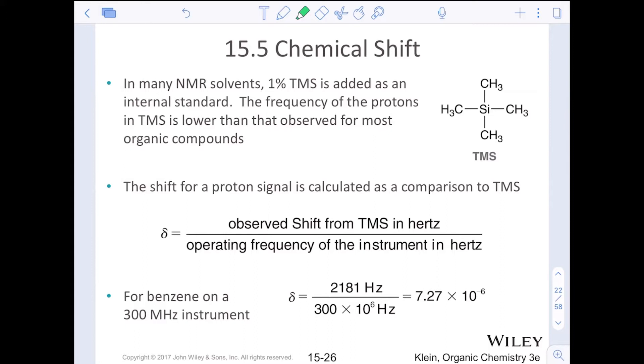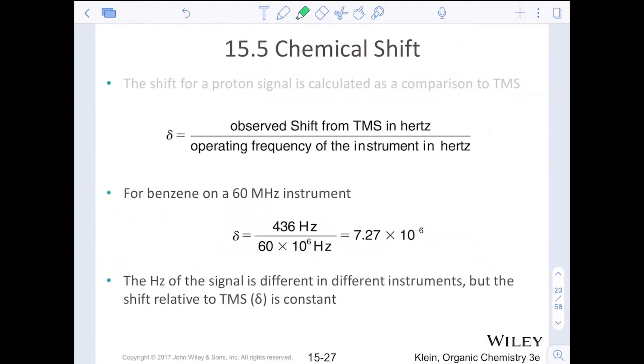In many NMR solvents, 1% of TMS, tetramethylsilyl, is added as an internal standard. The frequency of those protons in the four methyl groups on TMS is used as our ground zero, our point of zero. The shift for all of our proton signals are calculated as a comparison to this TMS. We put TMS in our sample just so that we know where our zero point is, and then we do this calculation for the chemical shift itself based off of the TMS shift and the frequency of the instrument in hertz.